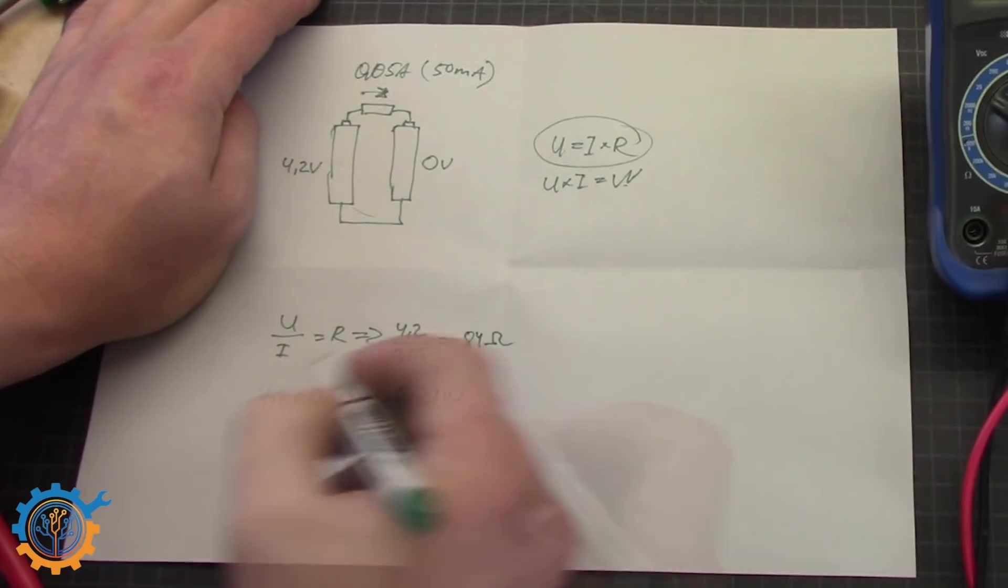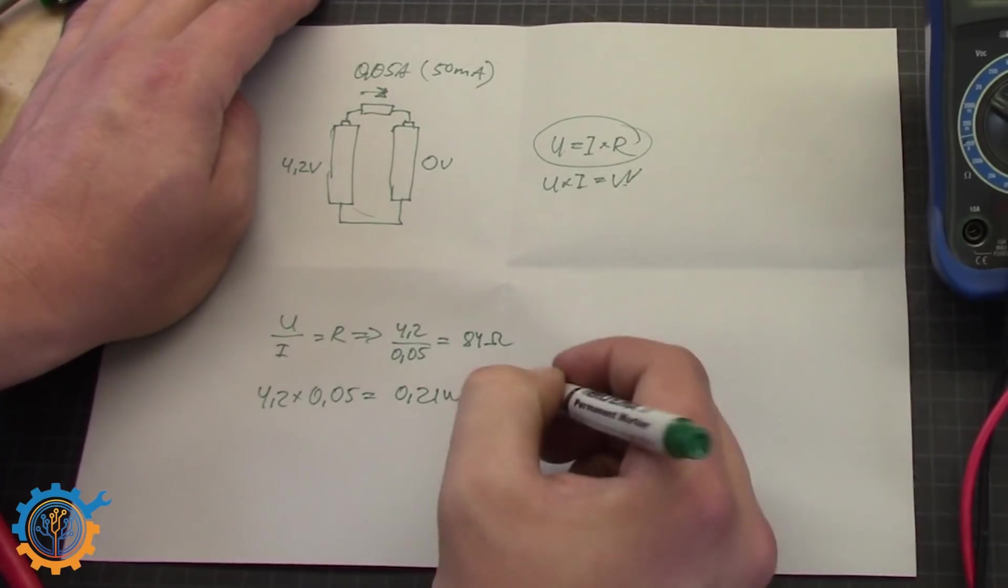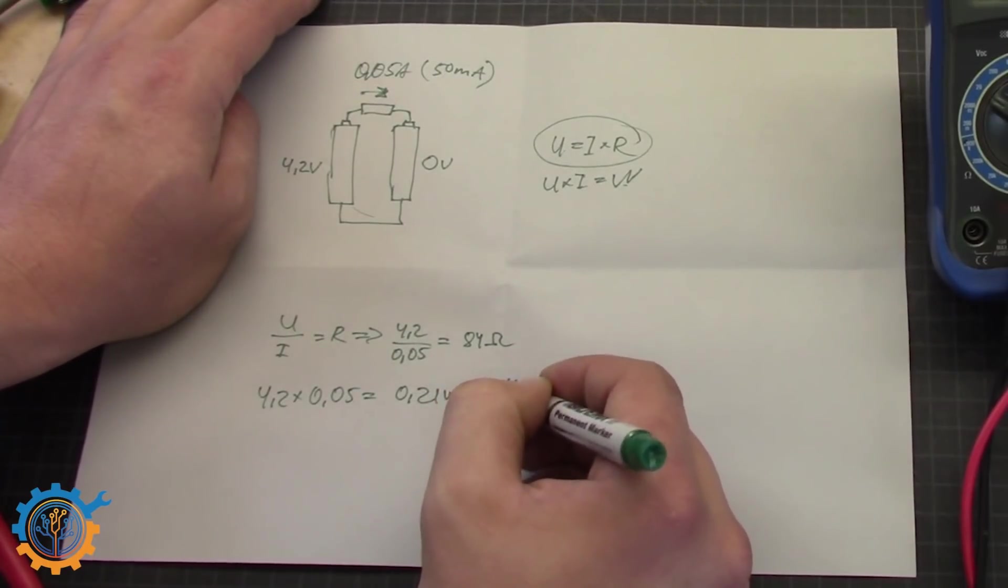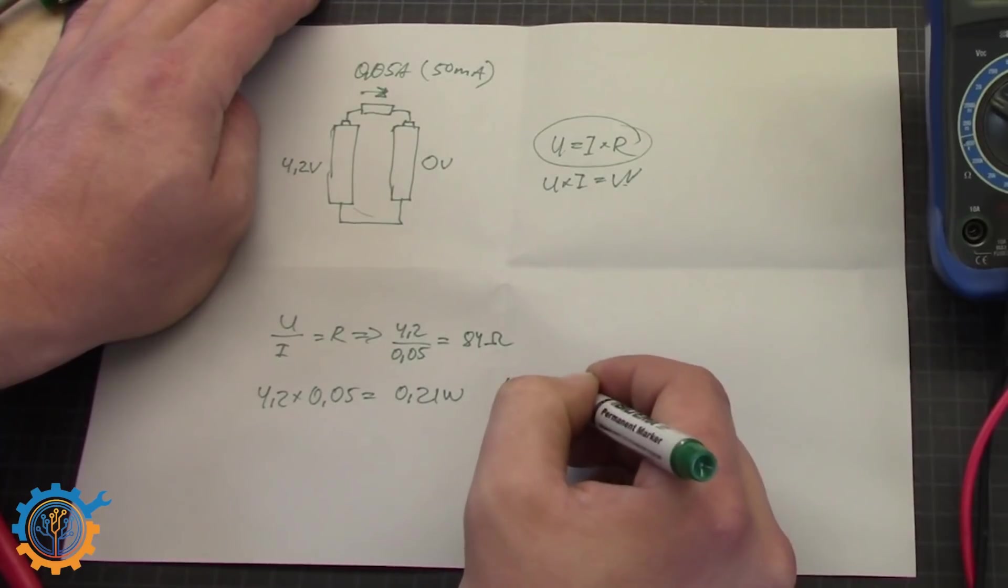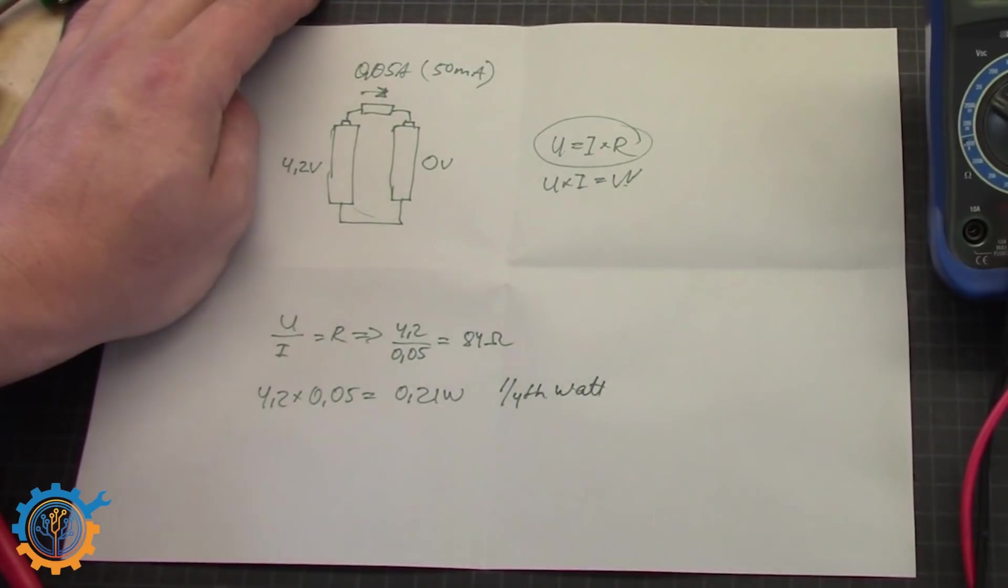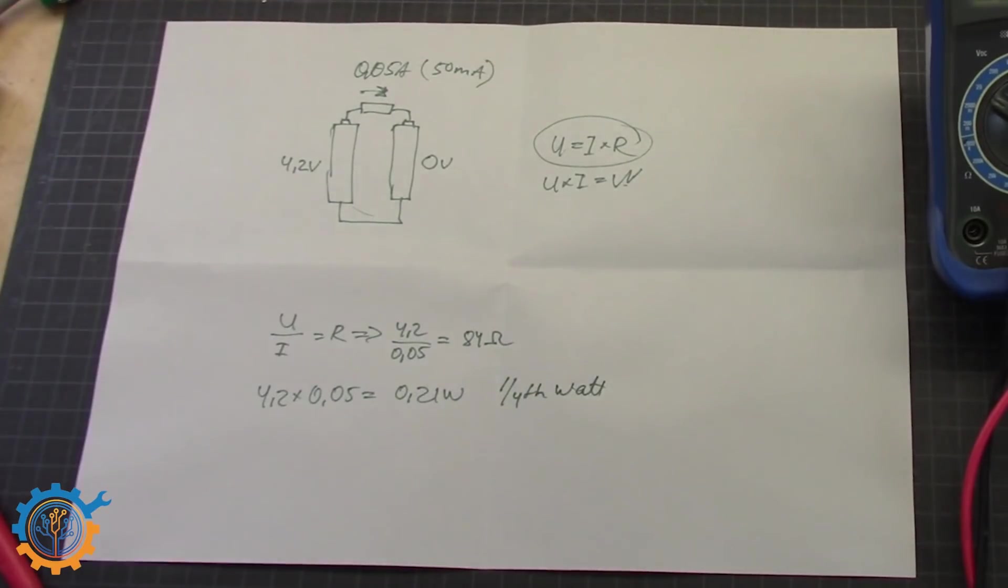And we know U and we know I. So we will need a resistor that is at least 1/4 watt. Otherwise the resistor might burn up.